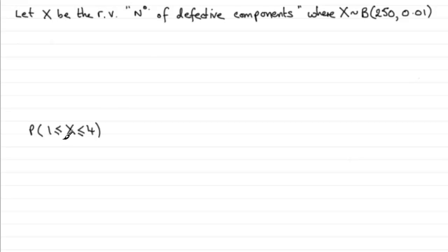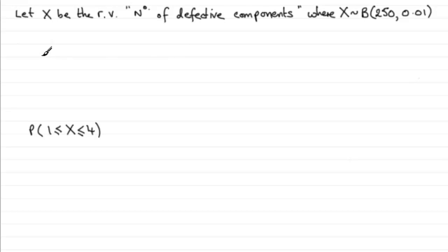So what is this suitable approximation going to be? In cases where N is large, normally greater than 50, and P, the probability of success, is less than 0.1, we can use a Poisson approximation.